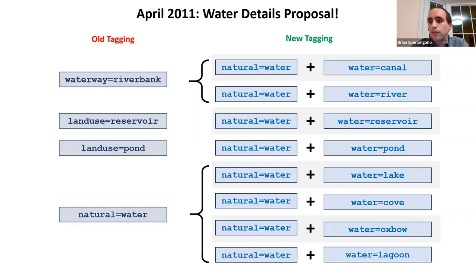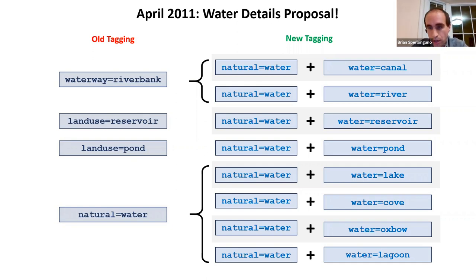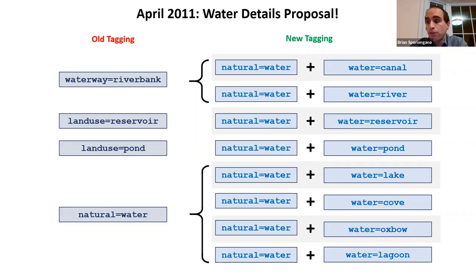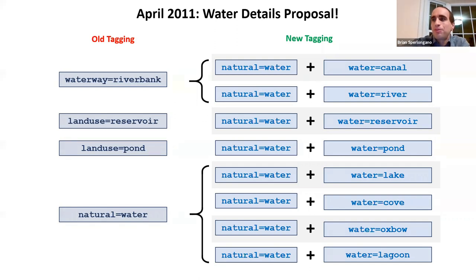This change brought an important feature: now as a mapper you could tag any water feature with natural=water without first determining what type it is — river, lake, pond, or reservoir. Furthermore, as a renderer or data consumer you could search for all water features under the single tag natural=water, at least once everybody adopts the new tag.